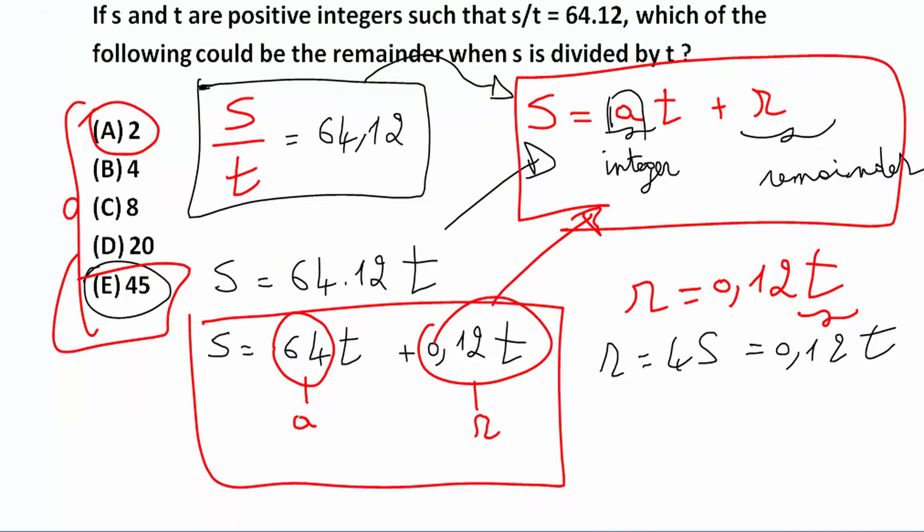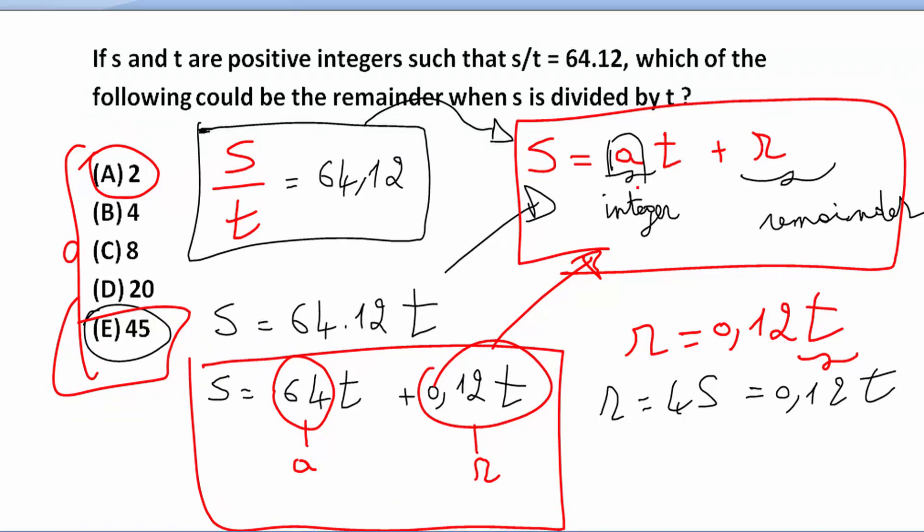Let me repeat. I took S is equal to A times T plus R. A must be an integer and the remainder must be an integer. And T is also an integer. So I took this form here and transformed it to something similar to this.